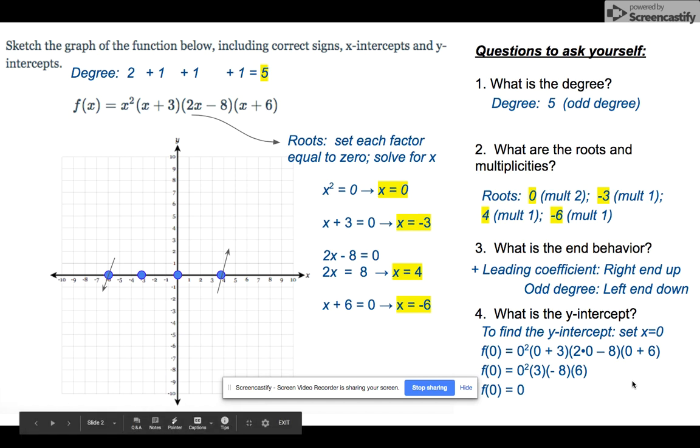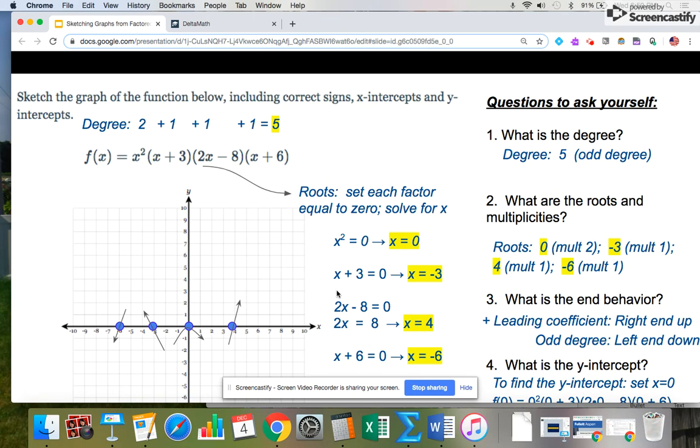Now to finish off my sketch before I go to Delta Math, remember your x equals 0 is a double root, so it's going to bounce there, and it goes a single pass through x equals negative 3. So I'm going to now escape out of this and remember this picture.